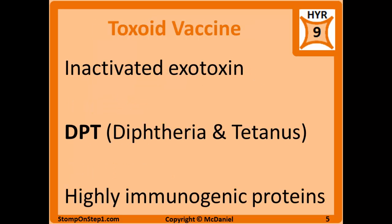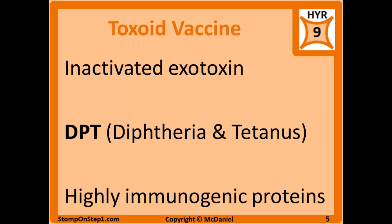A toxoid is a bacterial exotoxin that has been inactivated with heat or formaldehyde — the same method used to kill a full pathogen, but applied just to the toxin. This heat or formaldehyde removes the toxic effects so the toxin can be given in a vaccine without causing disease. This type of immunization creates immunologic memory against the toxin itself rather than the full pathogen. Toxoid vaccines are available for tetanus and diphtheria. The DPT vaccine, or Tdap, contains toxoid vaccines against diphtheria and tetanus, as well as a pertussis vaccine that is not a toxoid.